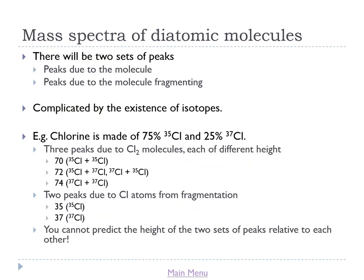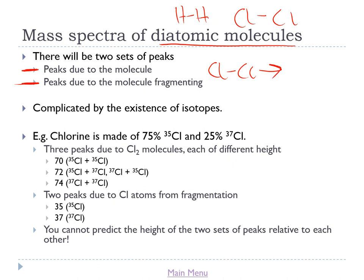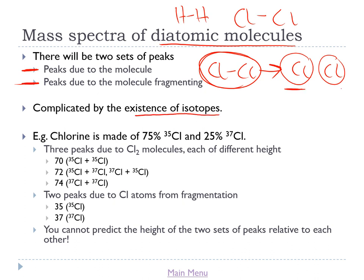A diatomic molecule is a molecule made of just two atoms, like H₂ or Cl₂. Looking at their mass spectra, there are two sets of peaks: one set from the molecule itself, and a second set from fragmentation — where the molecule breaks up during mass spectrometry into individual atoms. For chlorine, some molecules pass through unscathed, but others break into two chlorine atoms. Both the original Cl₂ molecules and the individual chlorine atoms appear on the mass spectrum. This is further complicated by the existence of isotopes: chlorine has two isotopes, Cl-35 and Cl-37, each giving its own separate peak.